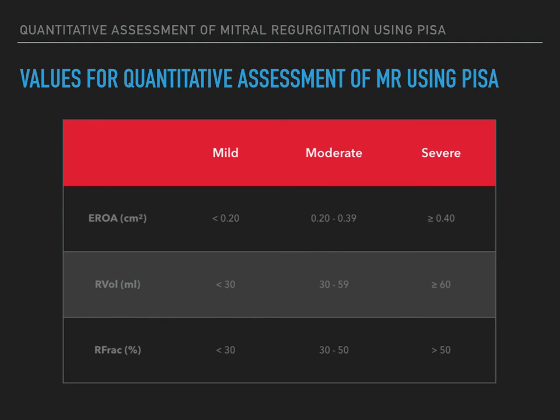In primary mitral regurgitation, an effective regurgitant orifice area of greater than 0.4 cm² is consistent with severe MR, between 0.2 and 0.39 cm² with moderate MR, and less than 0.2 cm² with mild MR. Regurgitant volumes of greater than 60 millilitres are linked with severe MR, between 30 and 59 millilitres with moderate MR, and less than 30 millilitres with mild MR.